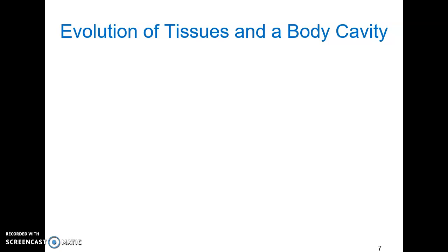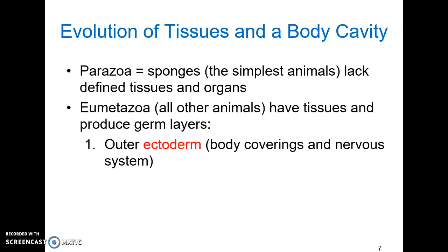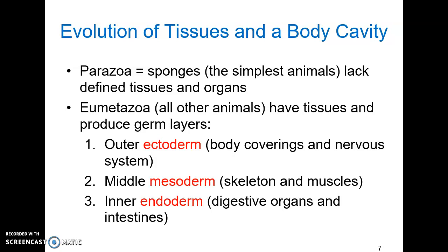Next, we can look at the evolution of tissues and a body cavity. Parazoans are the sponges — the simplest animals. They lack symmetry, defined tissues, and organs. Their cells can actually re-differentiate, meaning one cell can turn into another cell, so there is not much specialization at all. All other animals are defined as eumetazoans, which have tissues and produce germ layers that cannot re-differentiate.